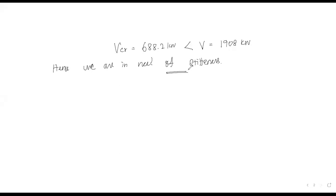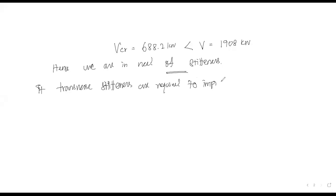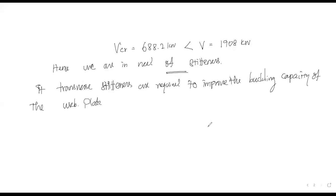Vcr equals 688.2 kN, which is less than the shear force developed due to load, that is 1908 kN. Hence we are in need of stiffeners. Transverse stiffeners are required to improve the buckling capacity of the girder web, including end bearing and intermediary stiffeners.